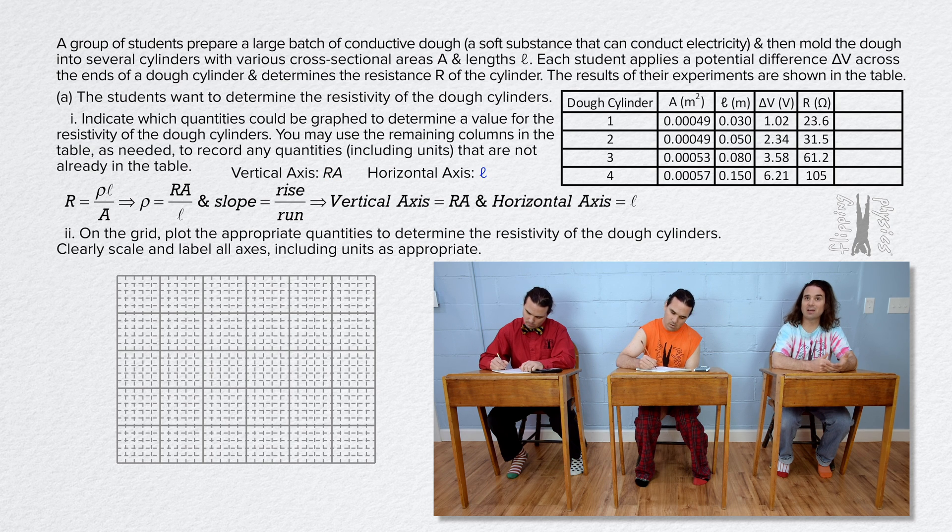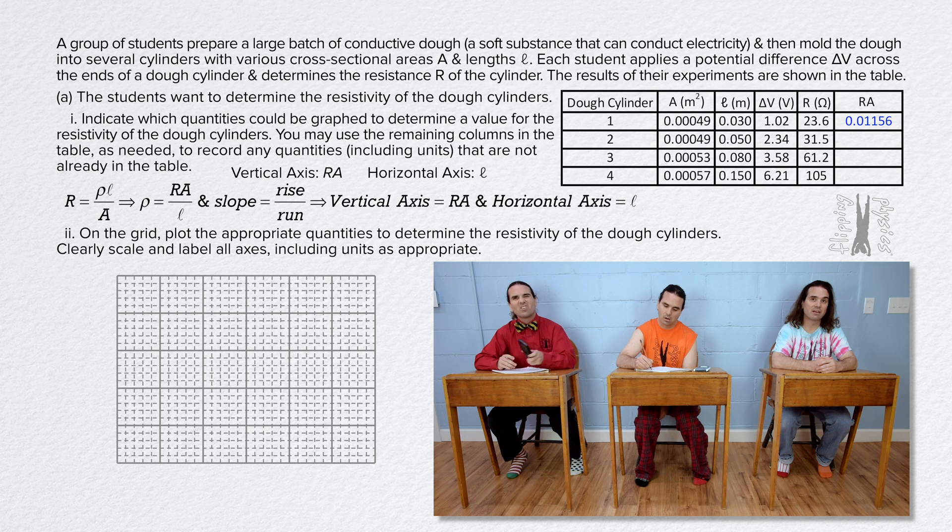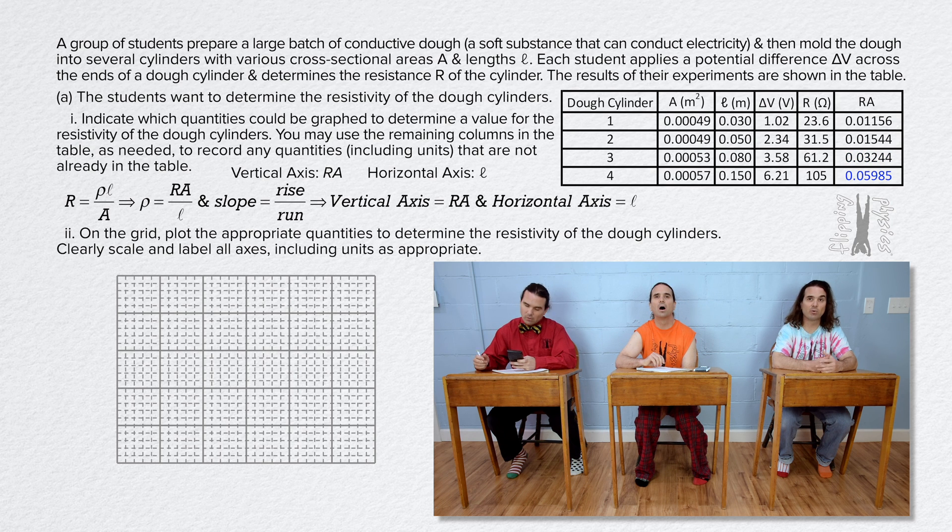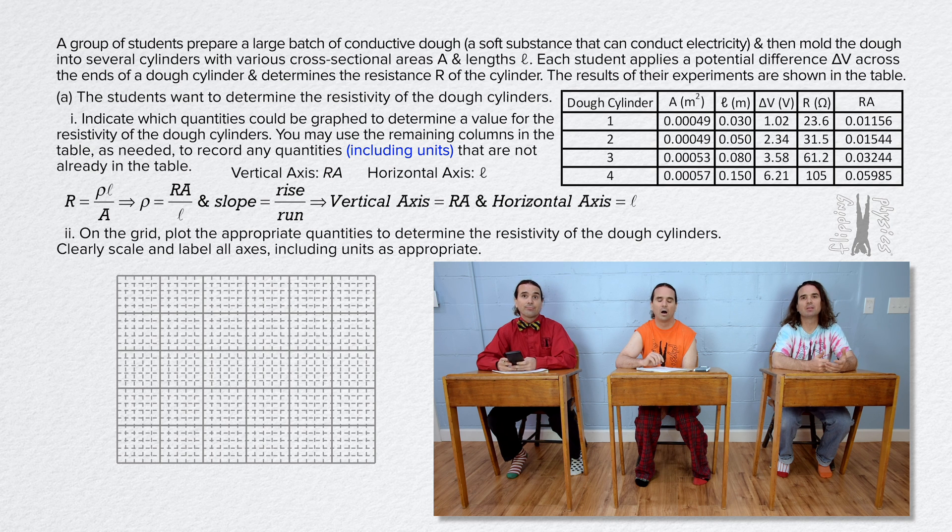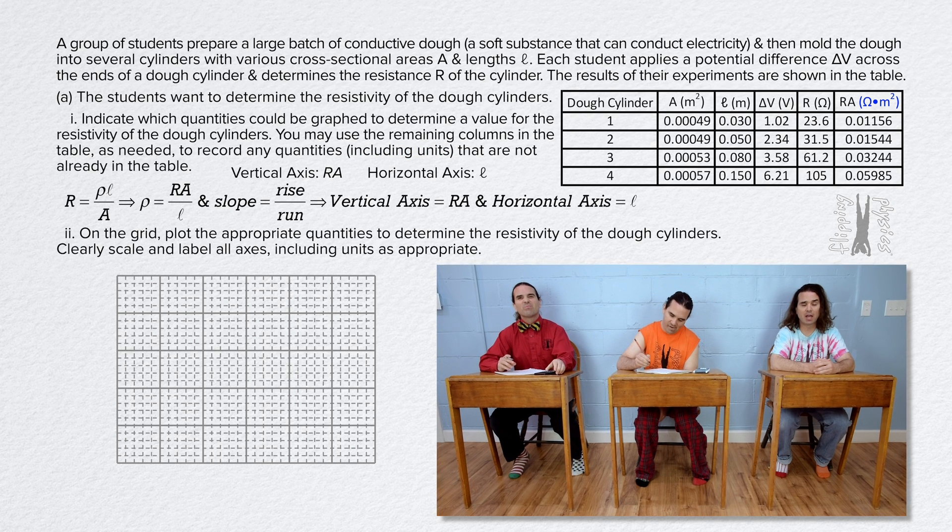And we need to calculate all those numbers by multiplying resistance times area. They are 0.01156, 0.01544, 0.03244, and 0.05985. Do not forget the units in your column label. In the problem it specifically says you need those units. Right. Thank you Billy. Resistance times area gives units of ohms times meters squared.